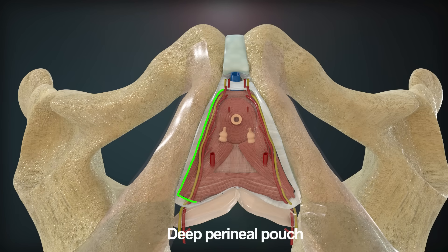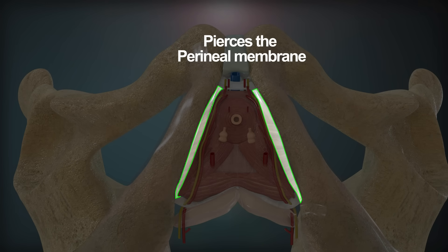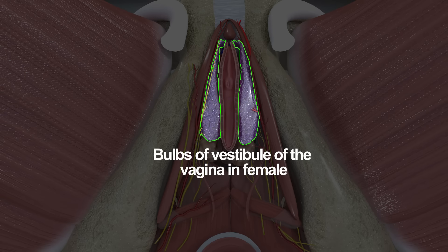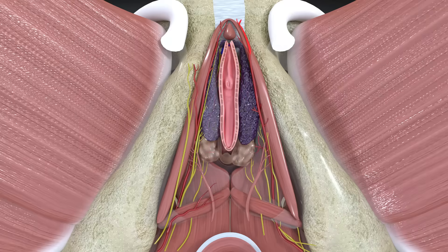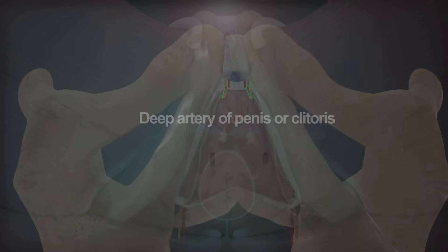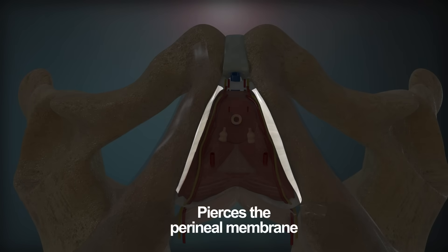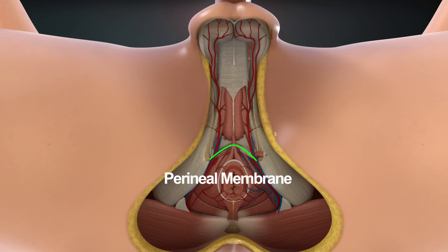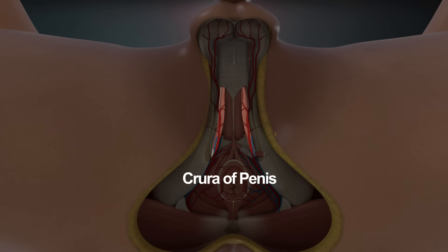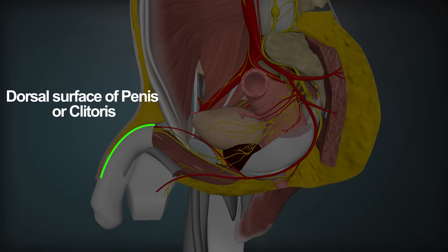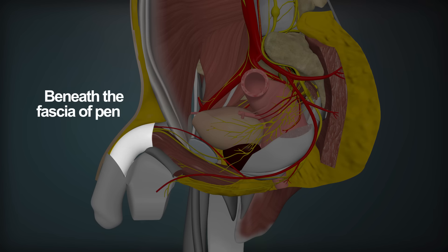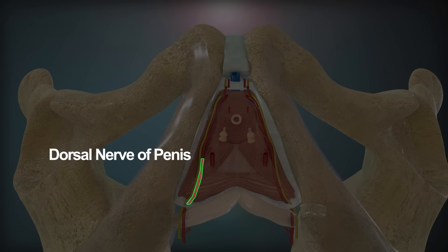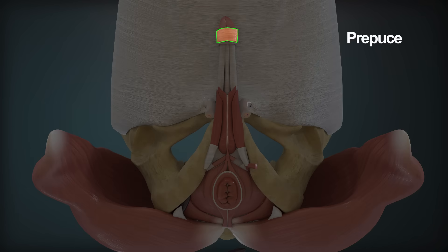Artery to the bulb and urethra arises in the deep perineal pouch, pierces the perineal membrane, and supplies the erectile tissue of the bulb of penis in male or bulbs of vestibule of the vagina in female. It also supplies the urethra in both sexes. Deep artery of penis or clitoris pierces the perineal membrane. Dorsal artery of penis or clitoris pierces the perineal membrane, passes upward between the crura of penis or clitoris, and runs on the dorsal surface of the penis or clitoris beneath Buck's fascia, lateral to the deep dorsal vein and medial to the dorsal nerve of penis. It supplies the prepuce and glans of penis.